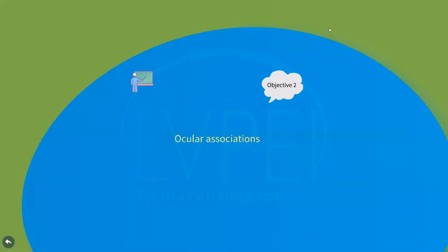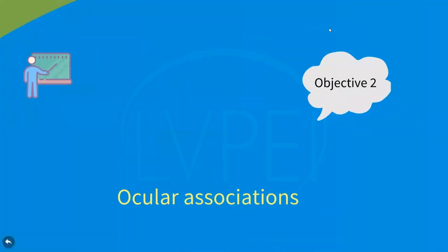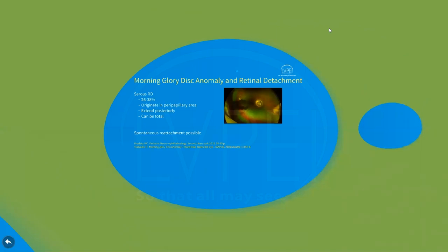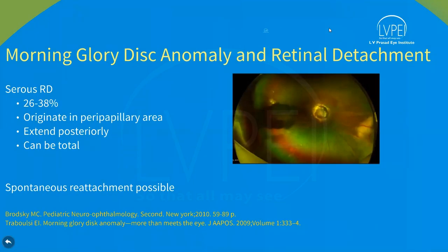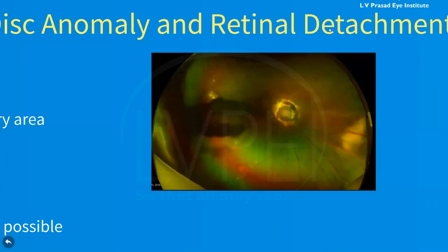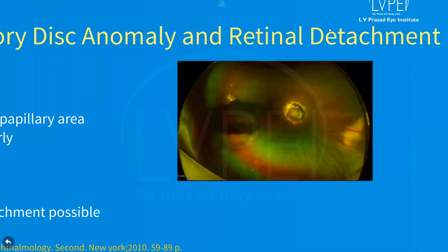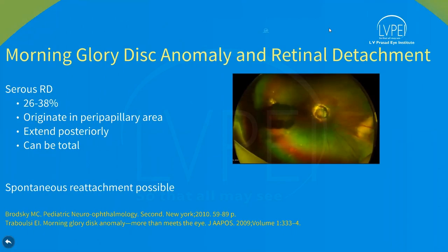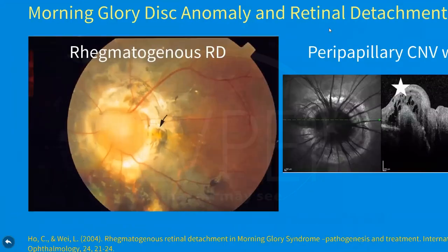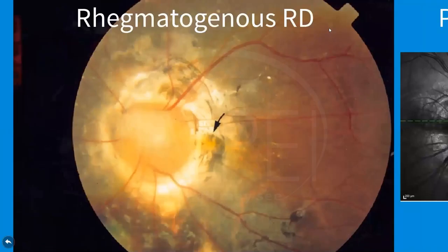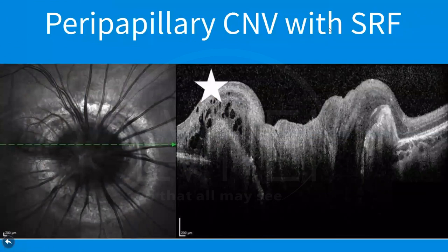Regarding ocular associations of morning glory disc: serous retinal detachments have been estimated to develop in 26–38% of eyes. These originate in the peripapillary area and extend posteriorly, occasionally progressing to total retinal detachments. Spontaneous resolution of retinal detachments is possible. It can also be associated with rhegmatogenous retinal detachment or peripapillary choroidal neovascular membrane.